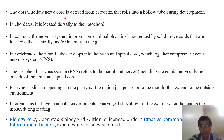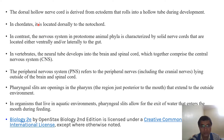Number one is the dorsal tubular nerve cord. This dorsal tubular nerve cord is derived from the ectoderm and it rolls into a hollow tube during the development process. In chordates, it is located dorsal to the notochord.